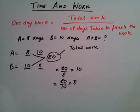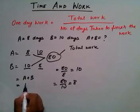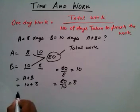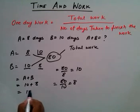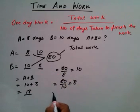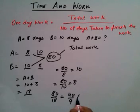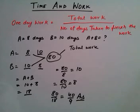Now we calculate A and B's combined one day work: A completes 10 units and B completes 8 units, so together they complete 18 units of work in one day. To finish 80 units of total work, we divide 80 by 18, which gives us 40/9 days. That is the final answer. This is the easiest method to calculate time and work problems.